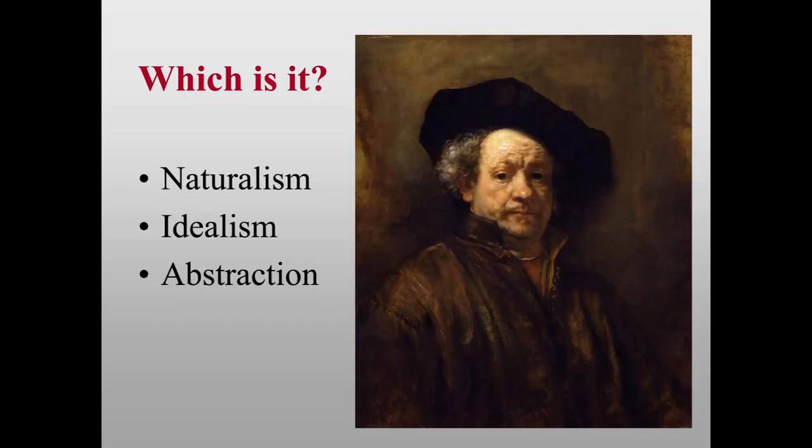Which is it? This is a self-portrait by Rembrandt. He doesn't look like an idealized figure with perfect proportions and a youthful wrinkle-free face. He's showing himself pretty much as he was — a bulbous nose, probably in his 50s, getting up in years with sags and wrinkles. It's a naturalistic view of the artist.